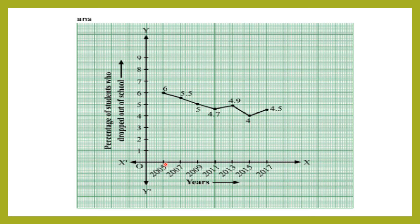Mark points: 2005 at 6%, 2007 at 5.5%, 2009 at 5%, 2011 at 4.7%, 2013 at 4.9%, 2015 at 4%, 2017 at 4.5%. Now join all the points to get the line graph.